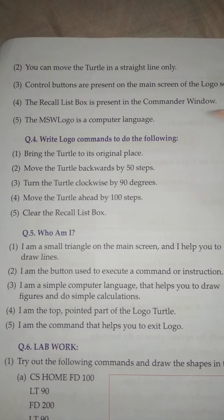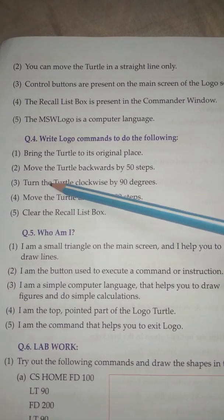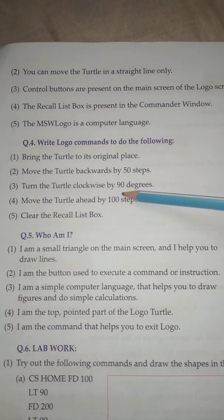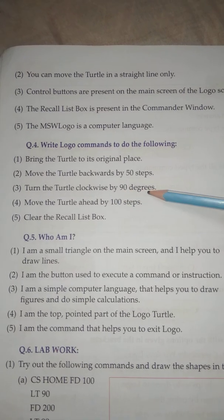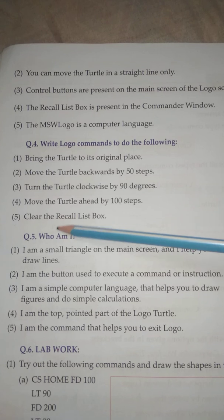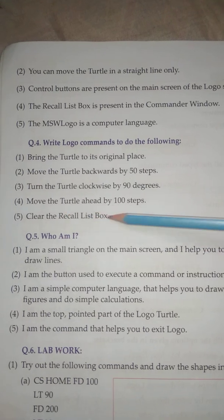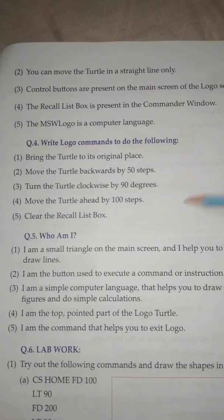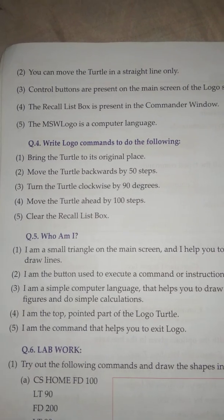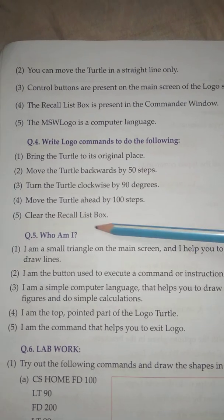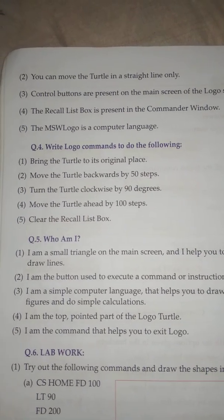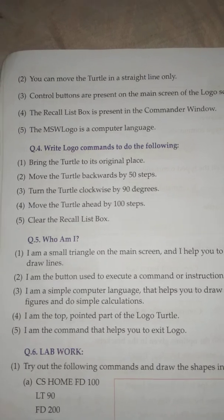Number Three: Turn the turtle clockwise by 90 degrees. Answer: Right command. Number Four: Move the turtle ahead by 100 steps. Answer: Forward command. Number Five: Clear the Recall List Box. Answer: Recall List Box.